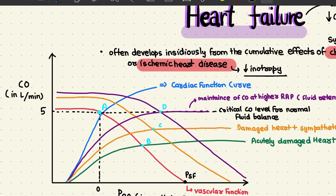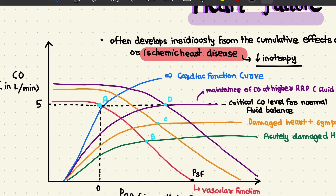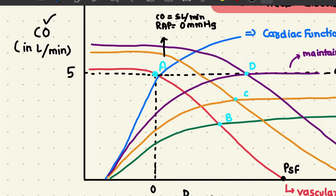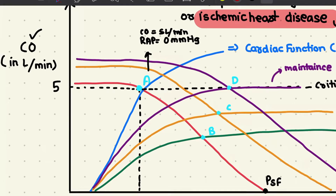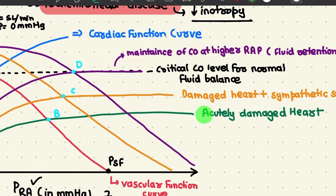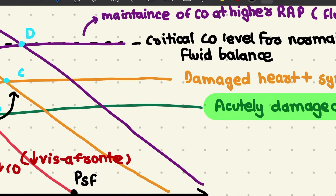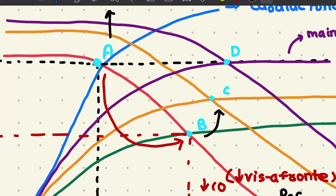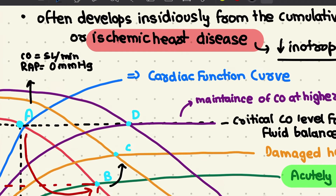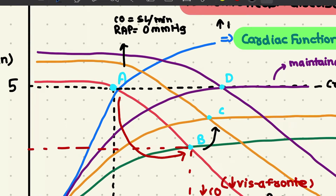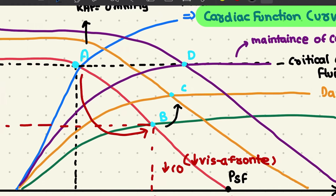An important concept is the cardiac function curve and vascular function curve. At point A, right atrial pressure is about 0 mmHg and cardiac output is maintained at 5 liters per minute — cardiac output on the y-axis, right atrial pressure on the x-axis. When the heart undergoes an acute attack, cardiac output decreases at the same right atrial pressure, so PRA increases as cardiac output falls. The acutely damaged heart then compensates by adjusting both curves.